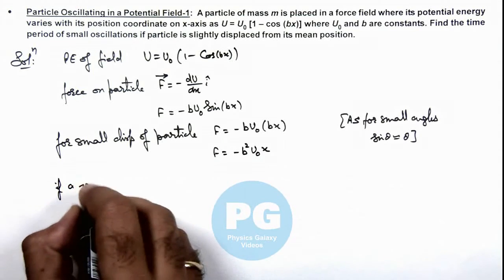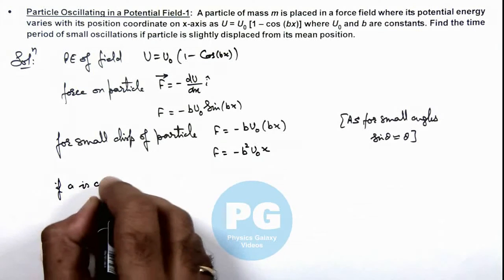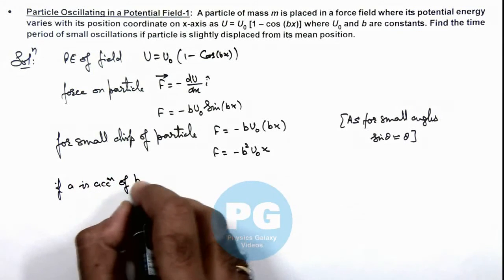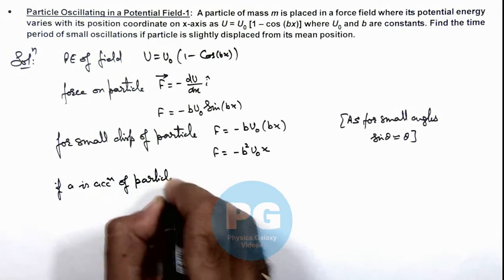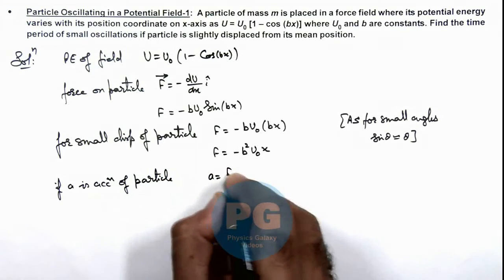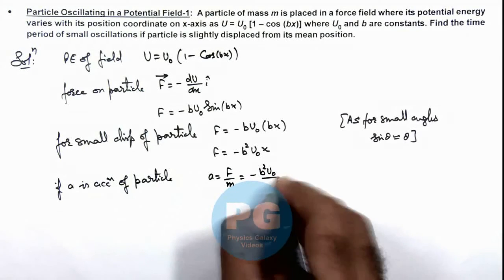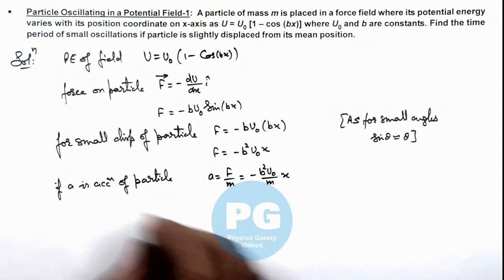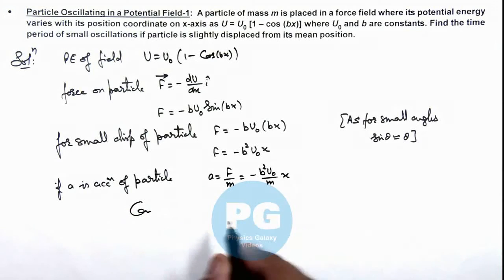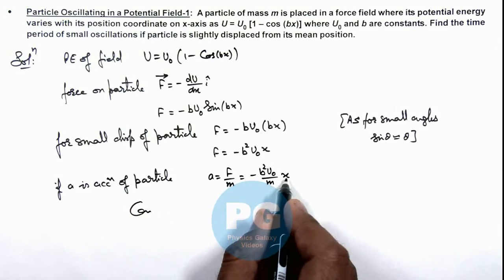If a is acceleration of particle, we can use acceleration as F/m which can be given as minus b²U₀/m times x. And here we can see as acceleration is proportional function of x and opposite to it,